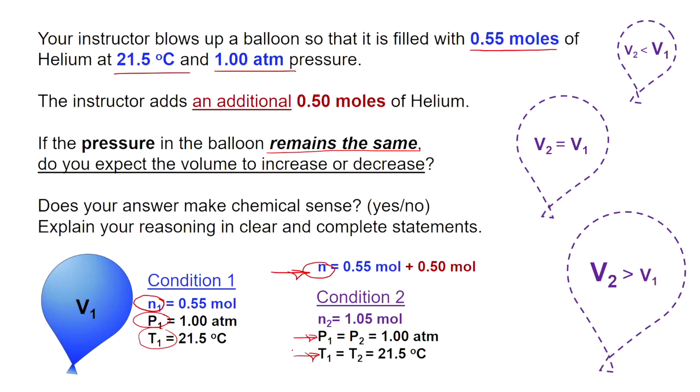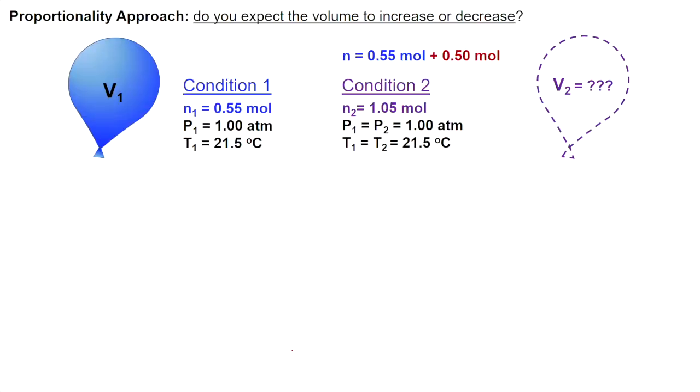There's two strategies that can help us come to the answer to this problem. Let's work through the qualitative approach first. Here we're going to utilize our understanding of proportionality between our variables of amount of moles N and volume V.